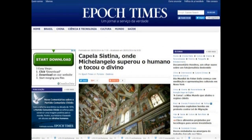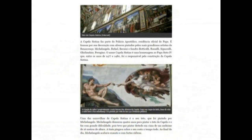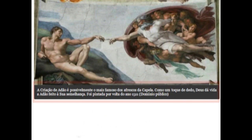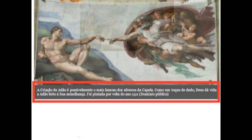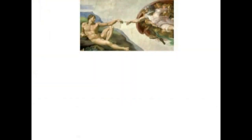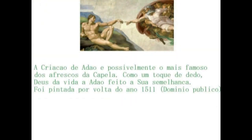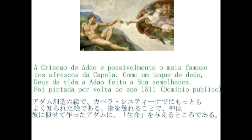が、これはアダムの創造などというような生やさしい絵ではありません。この絵の中には、大変な秘密が隠されていました。このEpoch Timesの公式ホームページの中に、それが説明されています。2人の人物が今、指と指を合わせようとしているという絵ですが、本当にそうでしょうか。ポルトガル語を日本語に翻訳してみました。ここが今日の最初のポイントですから、もう一度読んでみます。